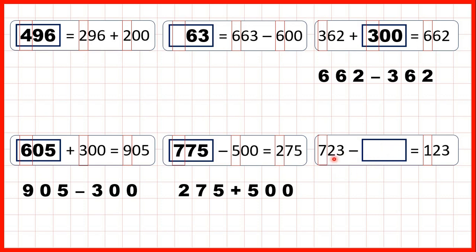And if the second number, not the first number is missing, we still use subtraction to find our missing number. So we could work out 723 minus 123, or we could just spot that we need to subtract 600.